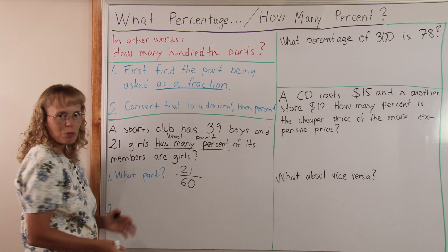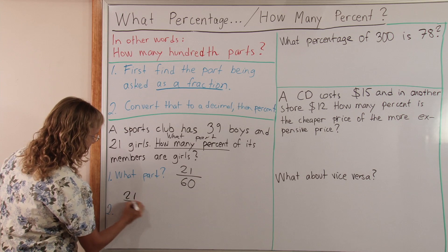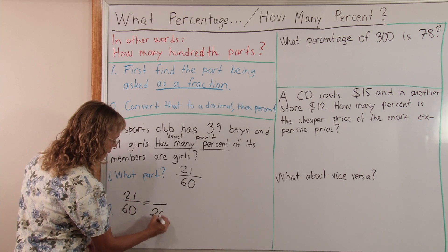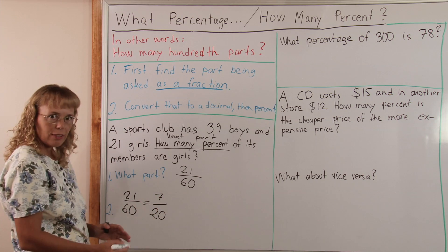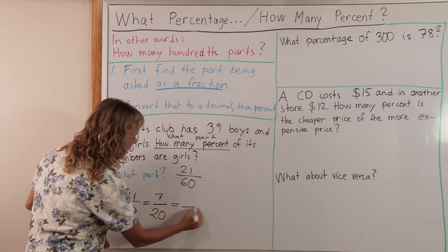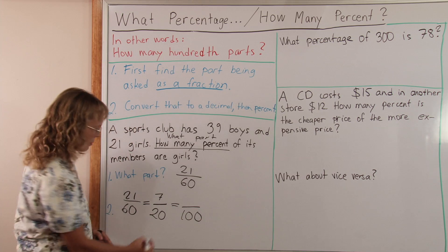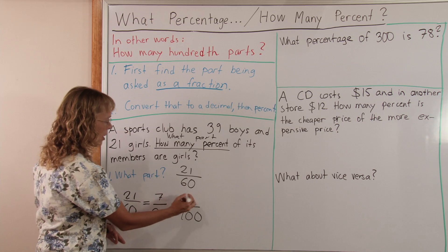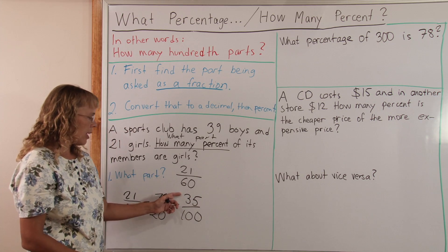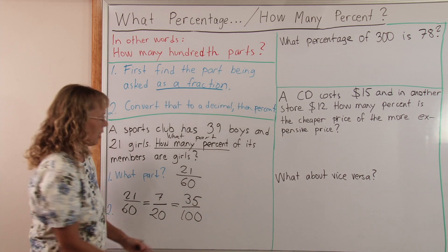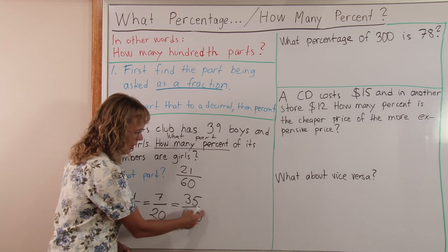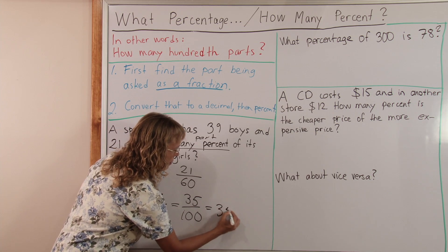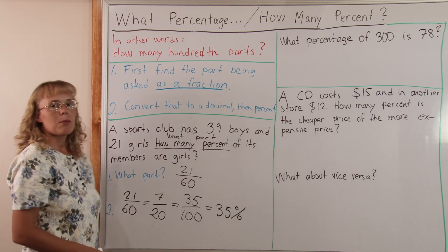Since I chose my numbers nicely, I can simplify 21 over 60 first to 7 over 20, and then write it with a denominator of 100 using equivalent fractions. 20 goes into 100 five times, so 7 times 5 is 35. This is now 35 percent. Remember, the fraction bar is the 'per' and 100 is the 'cent.' So 35 percent of the members are girls.